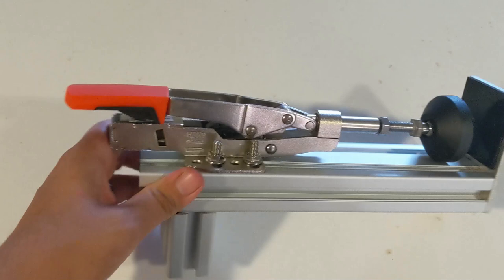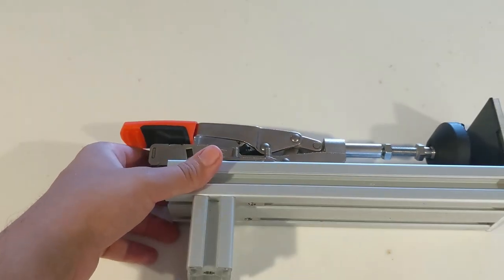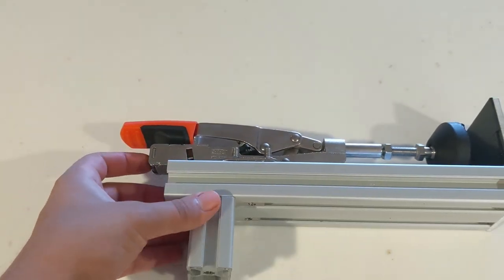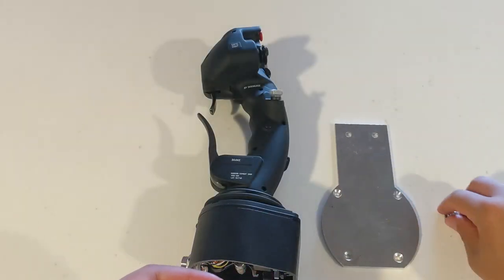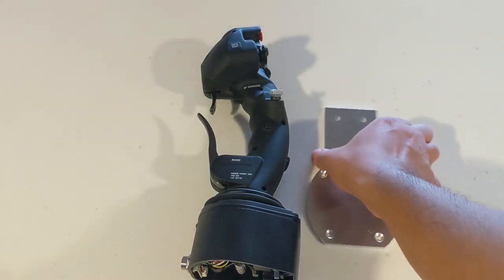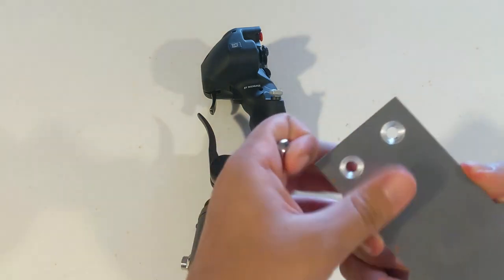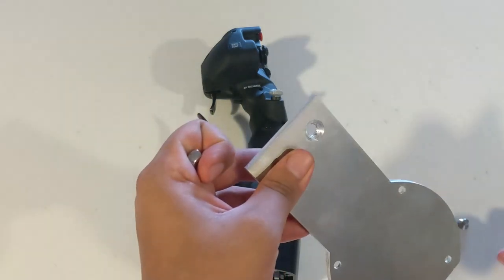And there we have it. Our table clamp is now installed. This might need a few minor adjustments due to table thickness. With the mount itself all but complete, now all that's really left to do is get that joystick onto the base plate and the base plate onto the mount.